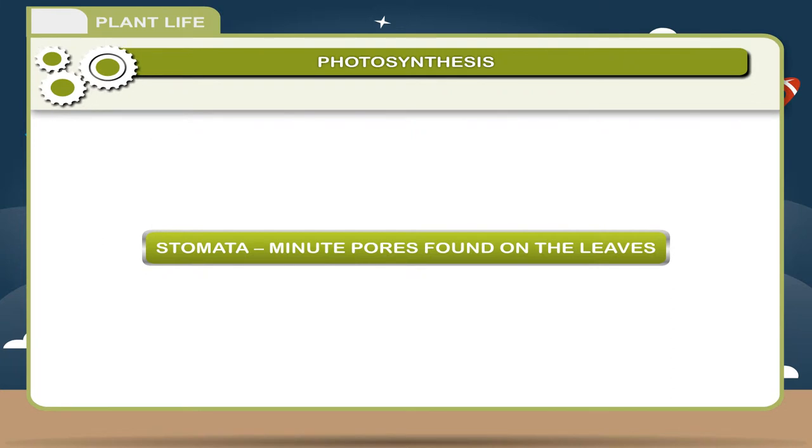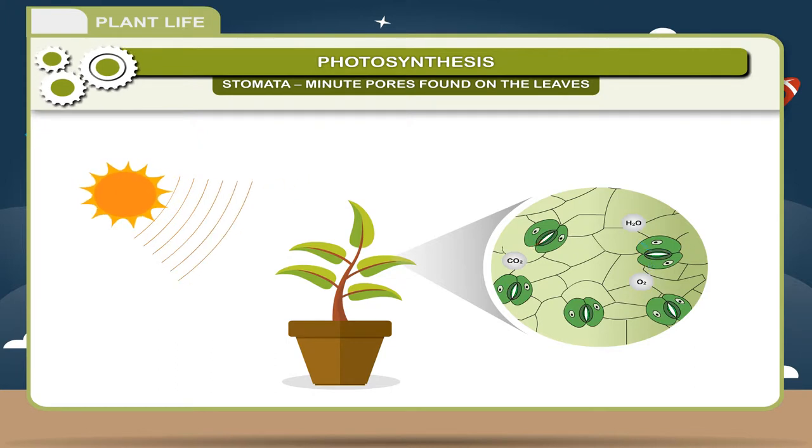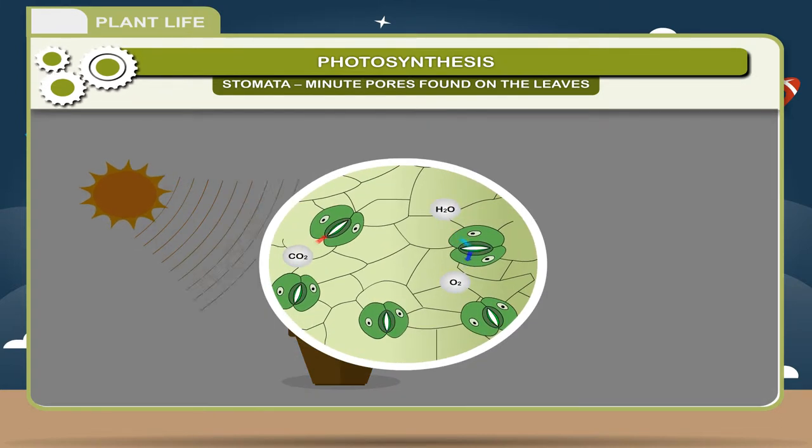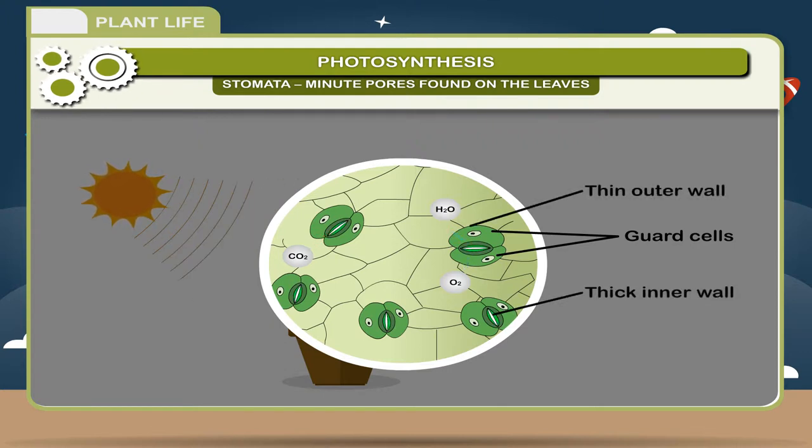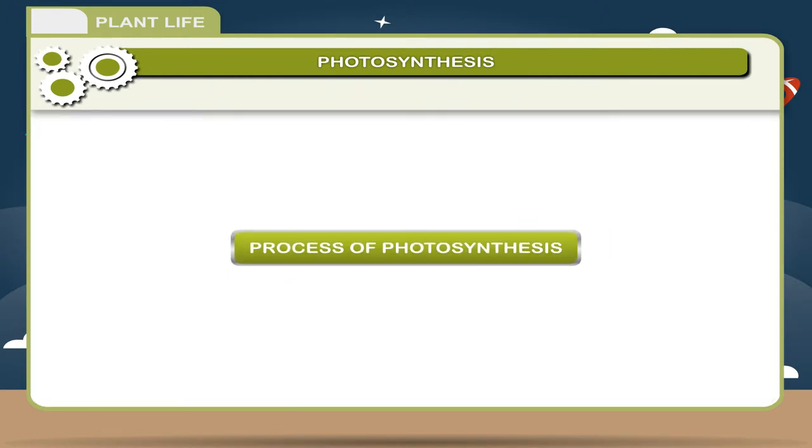Stomata: Stomata are minute pores found on the leaves, minute openings present on the leaf surface. They are present in large numbers on the lower surface of a leaf as compared to the upper surface. Each stoma is bordered by two guard cells with a thick inner wall and thin outer wall. The guard cells control the opening and closing of stomata, mainly by the movement of water because of changes in osmotic potential of the guard cell.